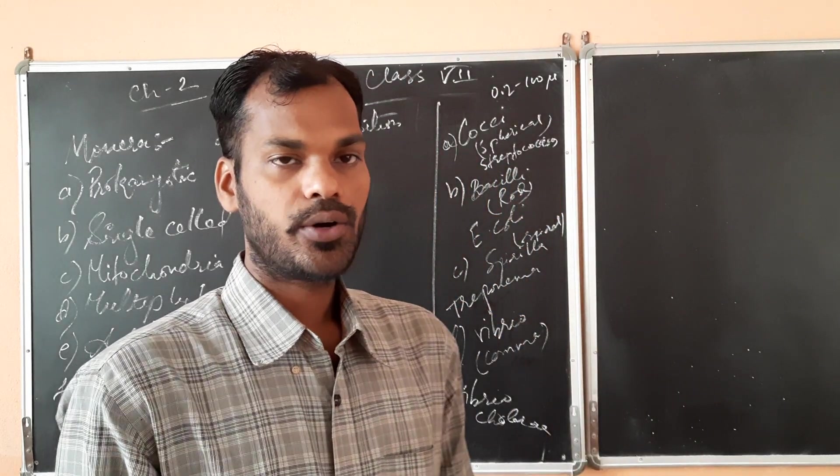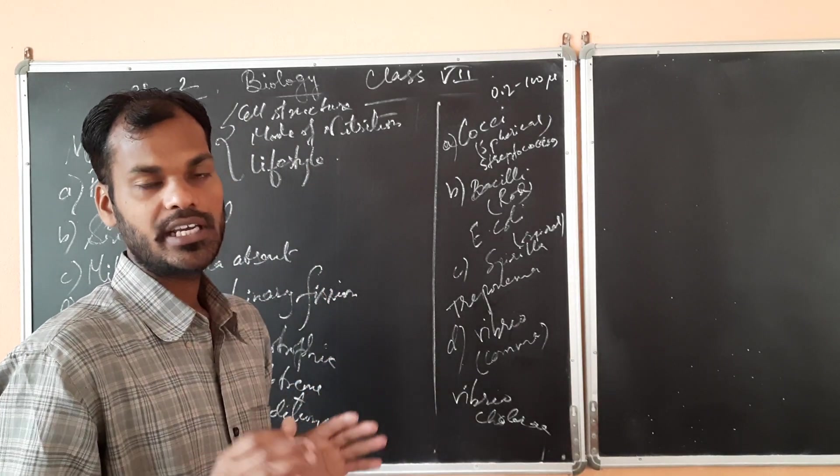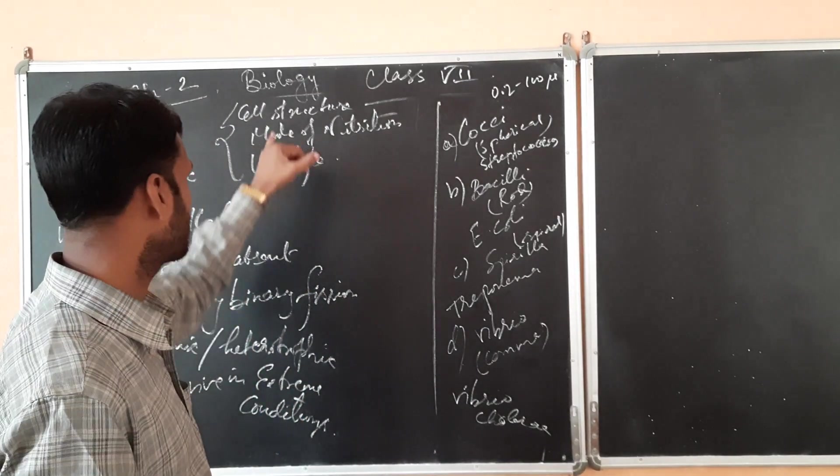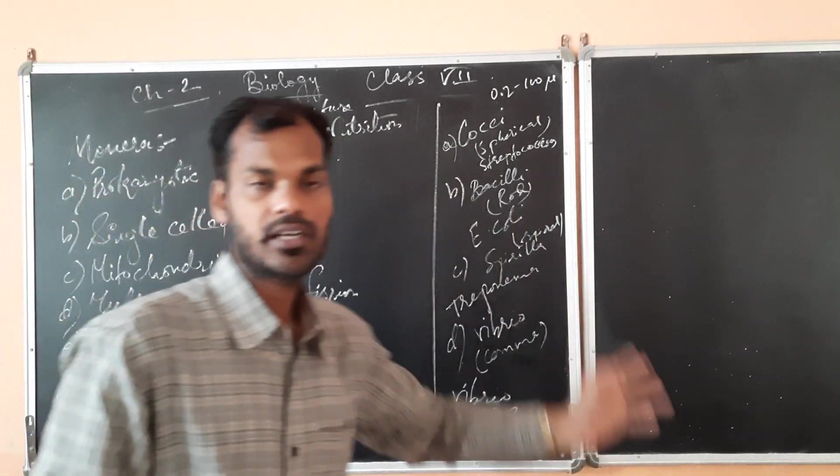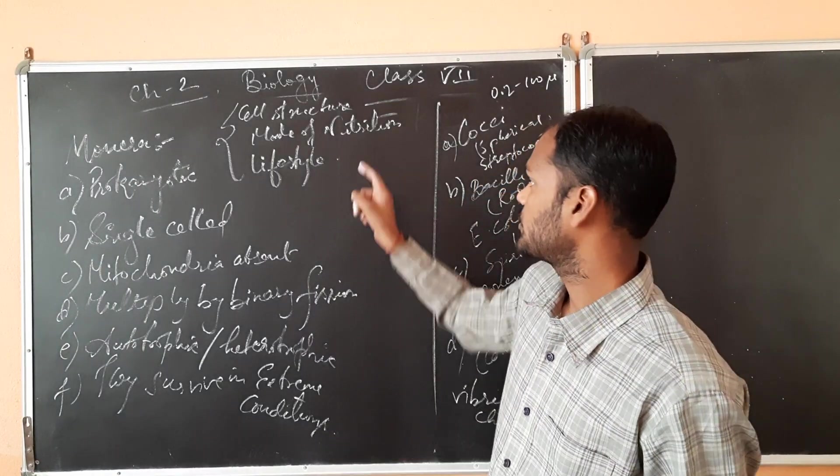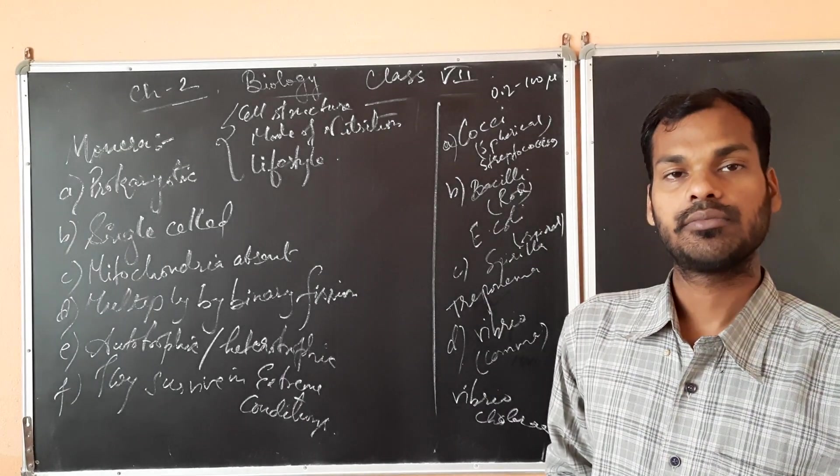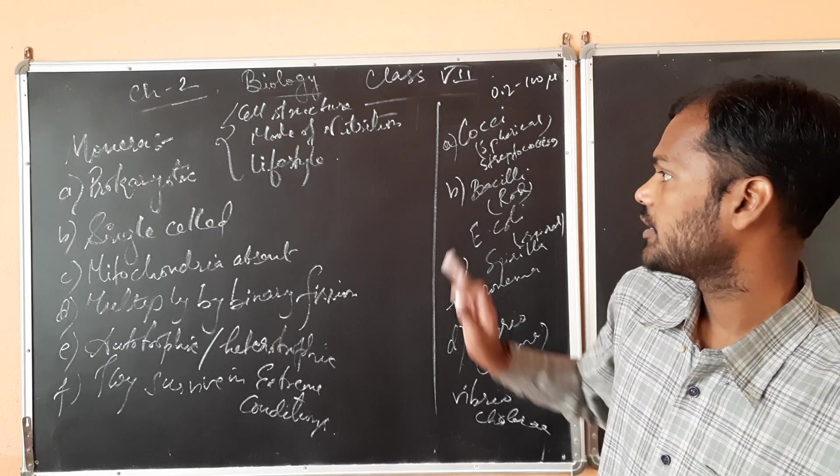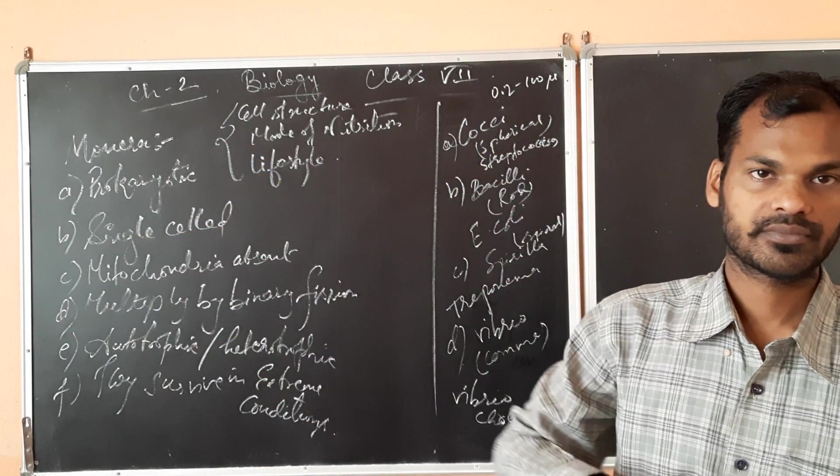Previously we have discussed this thing but just I am revising. So his mode of classification, the basis of classification was three things: cell structure, mode of nutrition, and lifestyle. Lifestyle is where they are living, how they are living. These three bases were the basis of the modern system of classification.